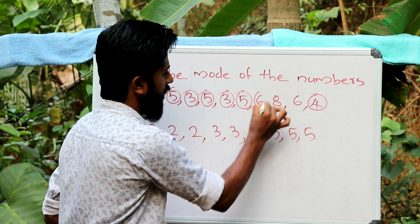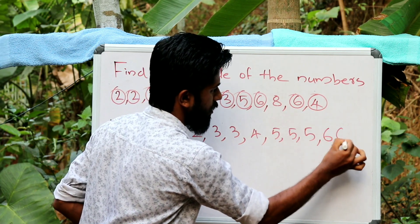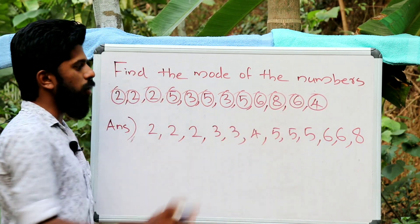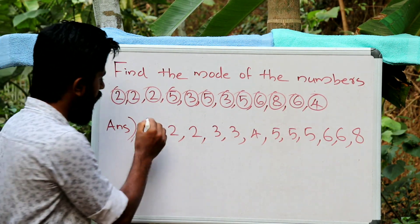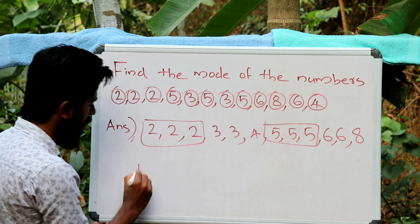Now, the number is 6. 6 is 2 times: 6, 6. Now, the number is 8. Okay, now, the number is 8: 2, 3 times. 5 is 3 times.